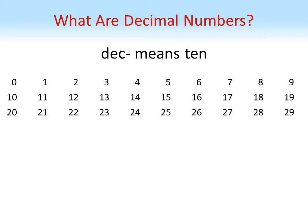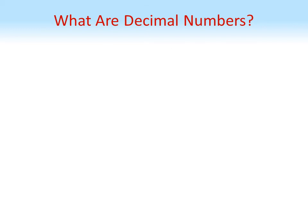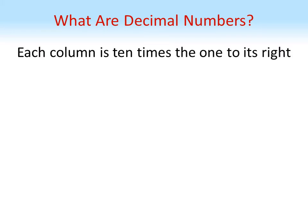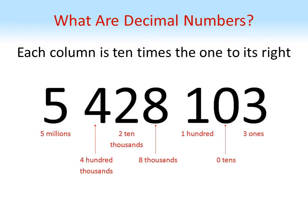This keeps going until we reach 99, at which point we create a third column, put a 1 in it, and reset the two right-hand columns. Each time our existing columns all reach 9, we create a new column on the left and put a 1 in it. This means each column is worth 10 times the column to its right. In our example, we have the number 5,428,103: the 3 represents ones, the 0 represents tens, the 1 represents hundreds, and so on.